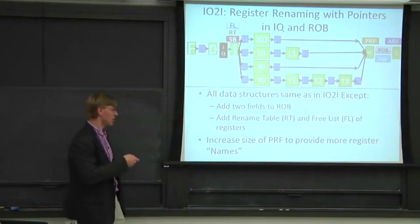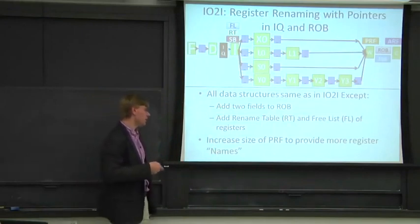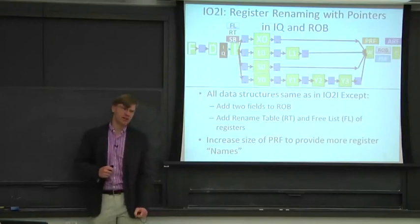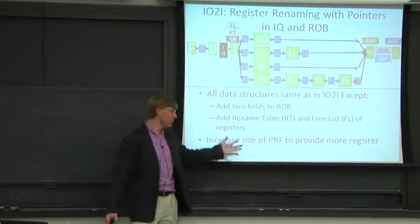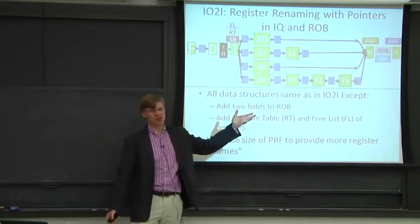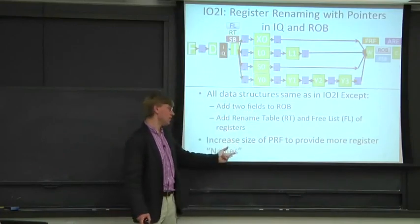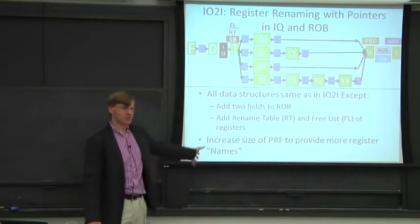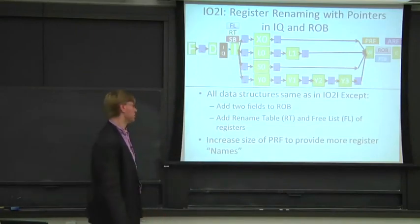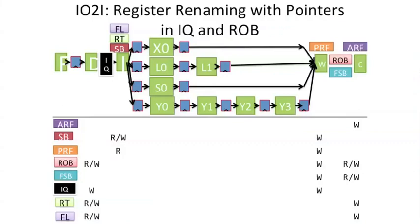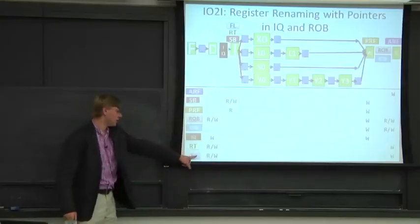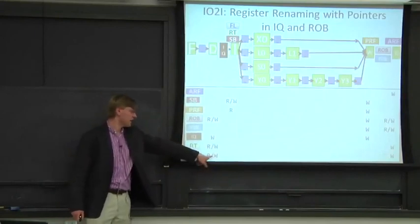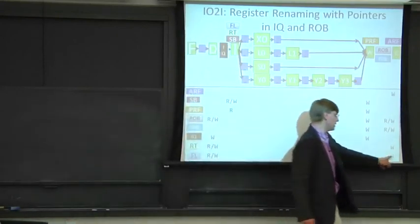We're also going to add two fields to the reorder buffer, and we want to increase the size of the physical register file to get more performance. If we have the same number of physical registers as architectural registers, we won't gain any performance from the register renaming step. The free list gets updated at the front of the pipe and also at the end.